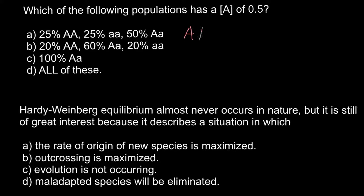One is homozygous dominant, another one is heterozygous, and another one is homozygous recessive. There can be different frequencies of each, but when we add all three genotypes, the allelic frequency should equal 100%.